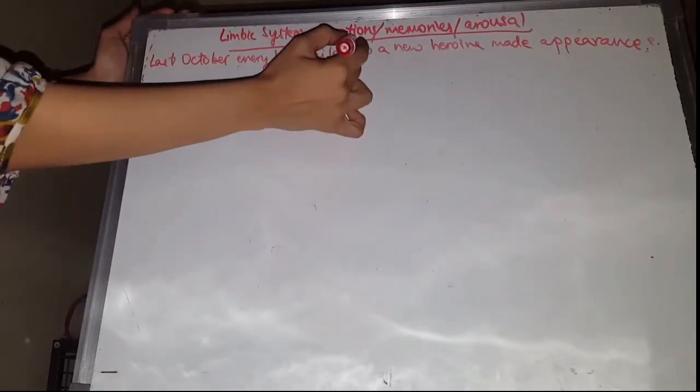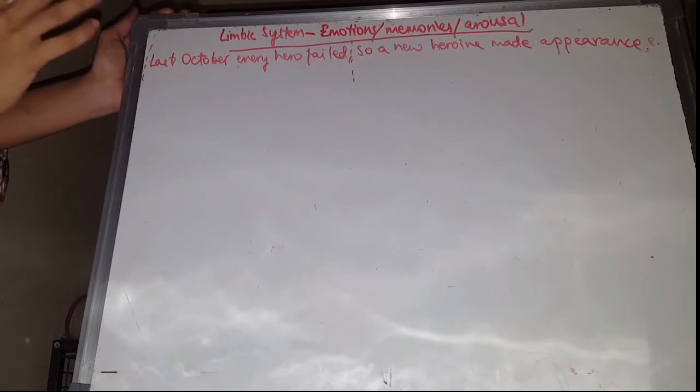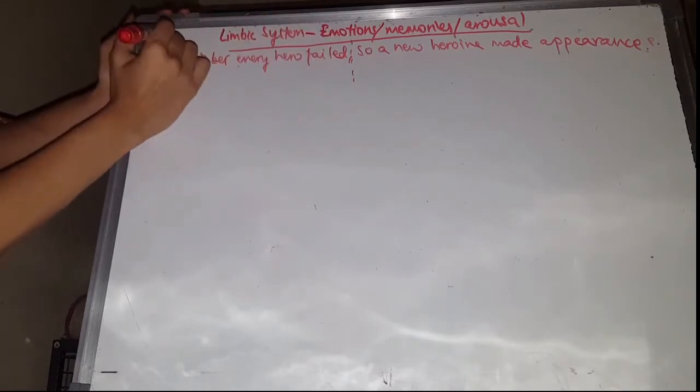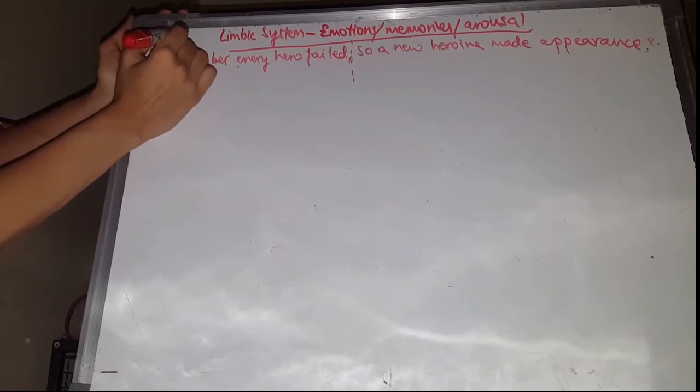So the first thing, let's start with the cortical structures. You need to know from 'last' to 'fail' that these structures are cortical structures.